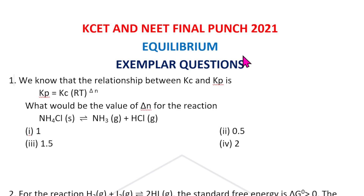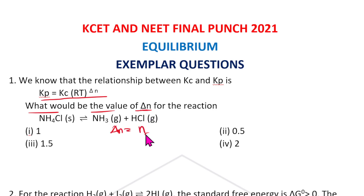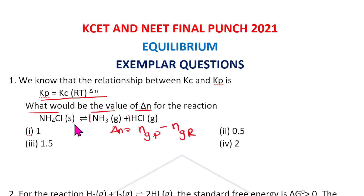We know that the relationship between Kc and Kp is: Kp = Kc × R^(Δn). What would be the value of Δn? Remember, Δn = moles of gaseous products minus moles of gaseous reactants. The product has one and one, so two moles; the reactant has zero. So two minus zero equals two. The answer for this question is the fourth option.